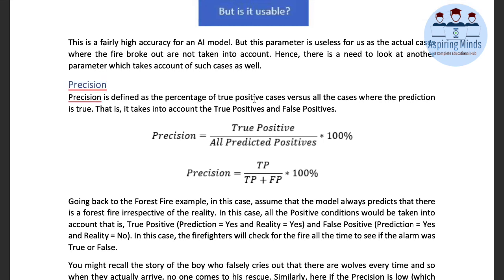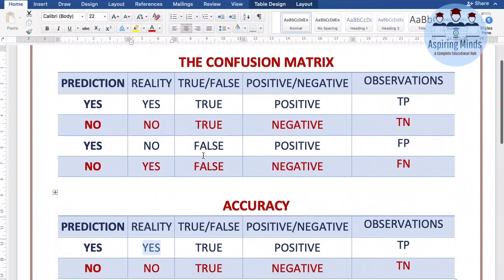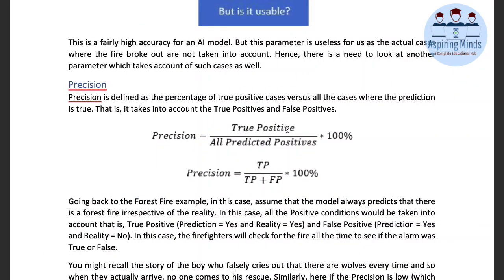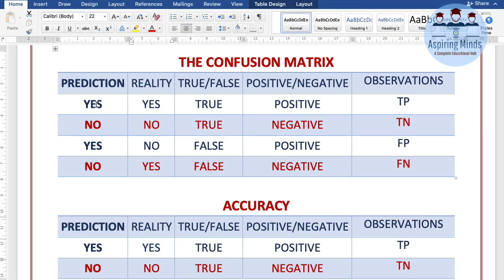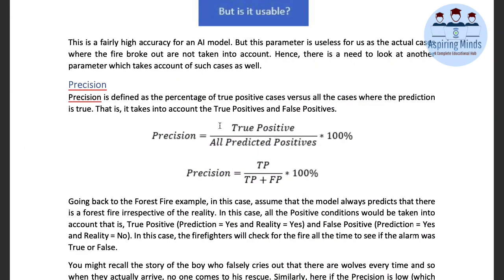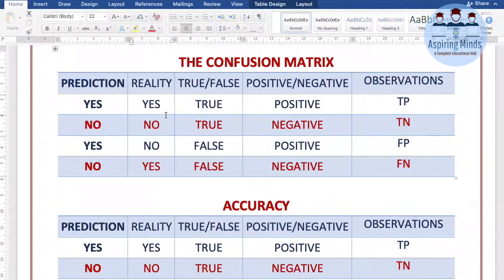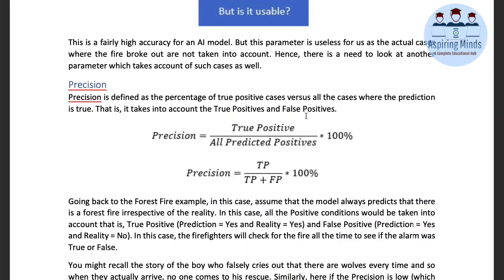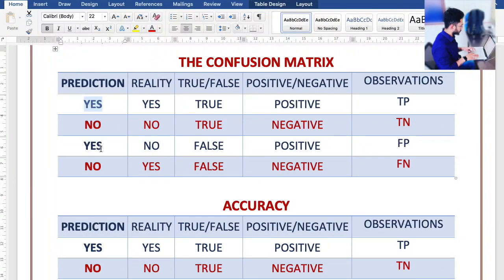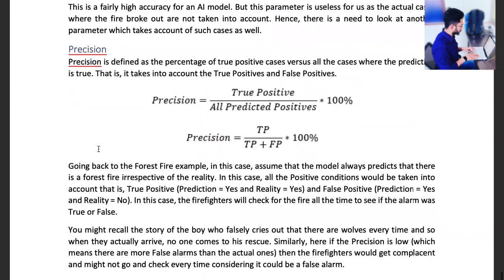Precision is defined as the percentage of true positive cases versus all the cases where the prediction is positive. True positive cases are those where both prediction and reality are yes. The predicted positive cases are two: true positive and false positive — both cases where yes was predicted.